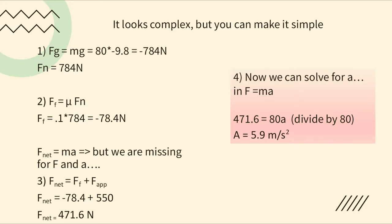You might think it's time to use F-net = ma, but we're still missing both F and a. There's no way to find net force through F = ma if we're missing acceleration. The only way to find net force is from the forces in the horizontal direction: force friction and force applied. Net force = sum of those two forces. F-net = −78.4 + 550 = 471.6 newtons.